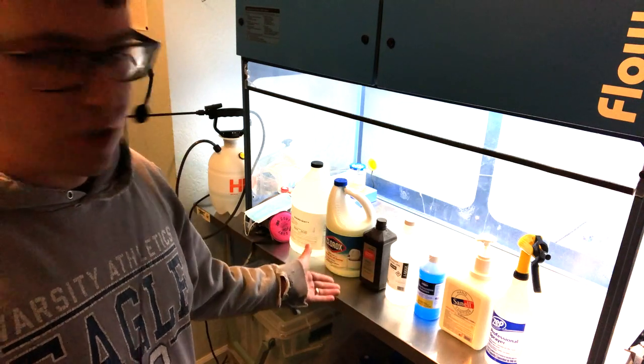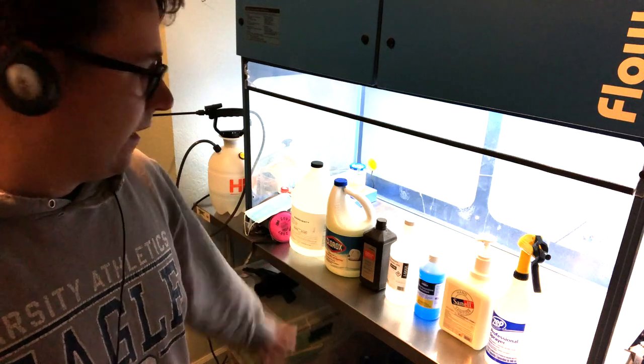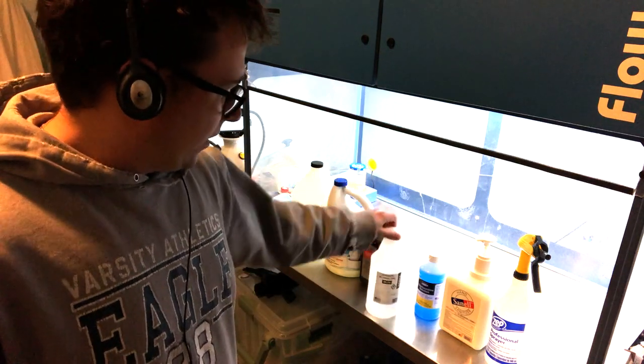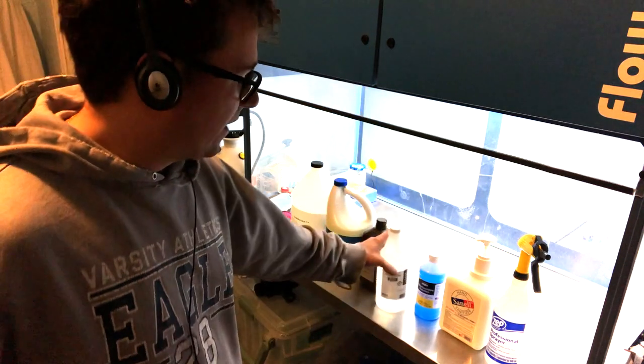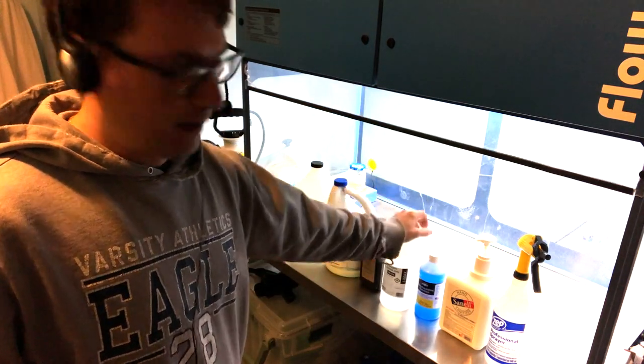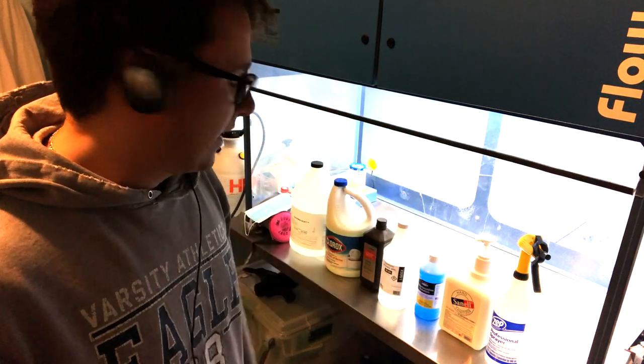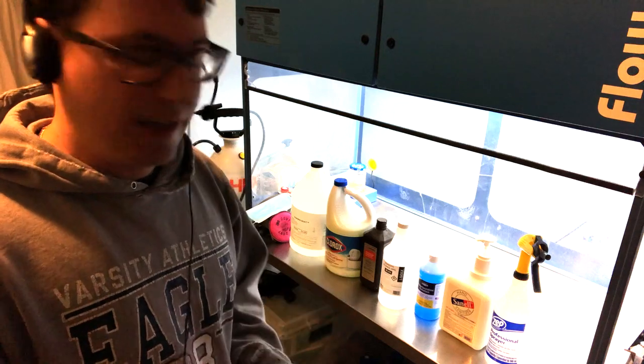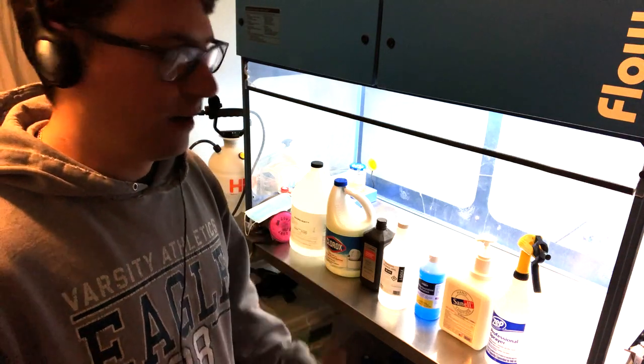I like to buy 99% isopropyl and then dilute it down to 70%. I find it's cheaper to do it that way. You can buy 70% IPA and that works just as well.